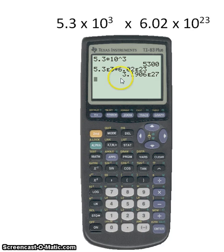So here's our answer. It would be 3.2 times 10 to the 27th.